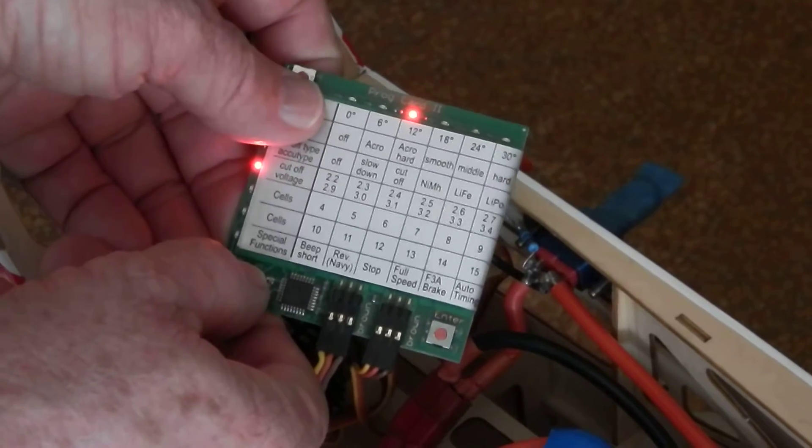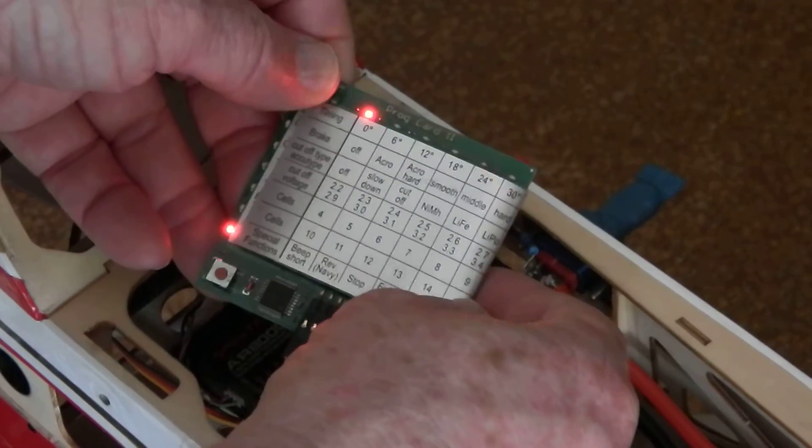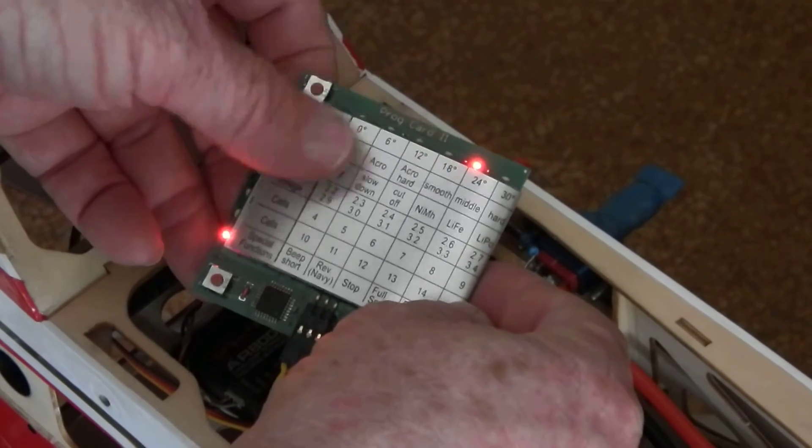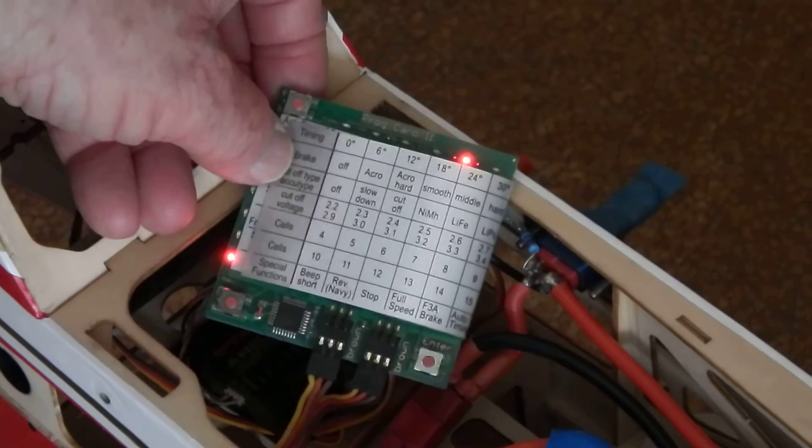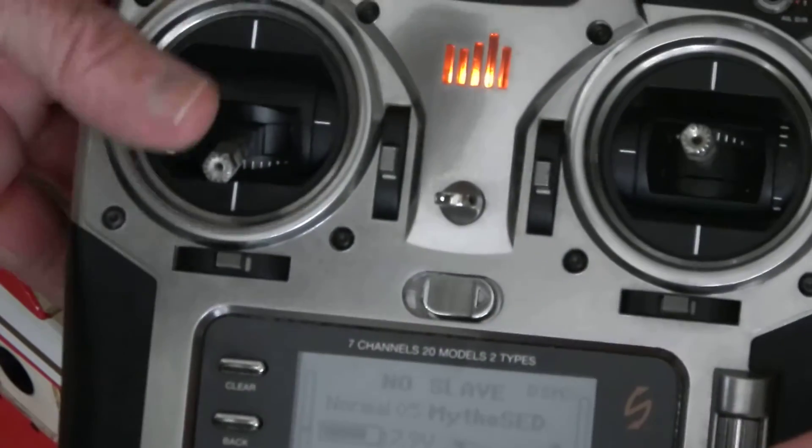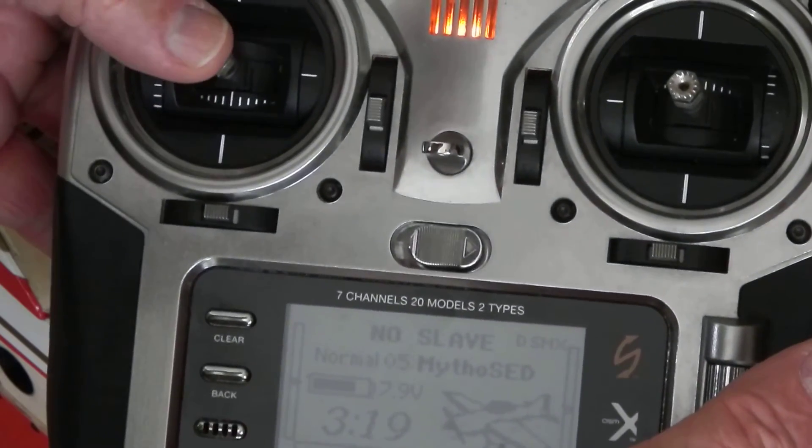Then you go down to your special functions, select F3A brake, and then set your radio's throttle to the point that you want, say at half, that is about 50% F3A brake.